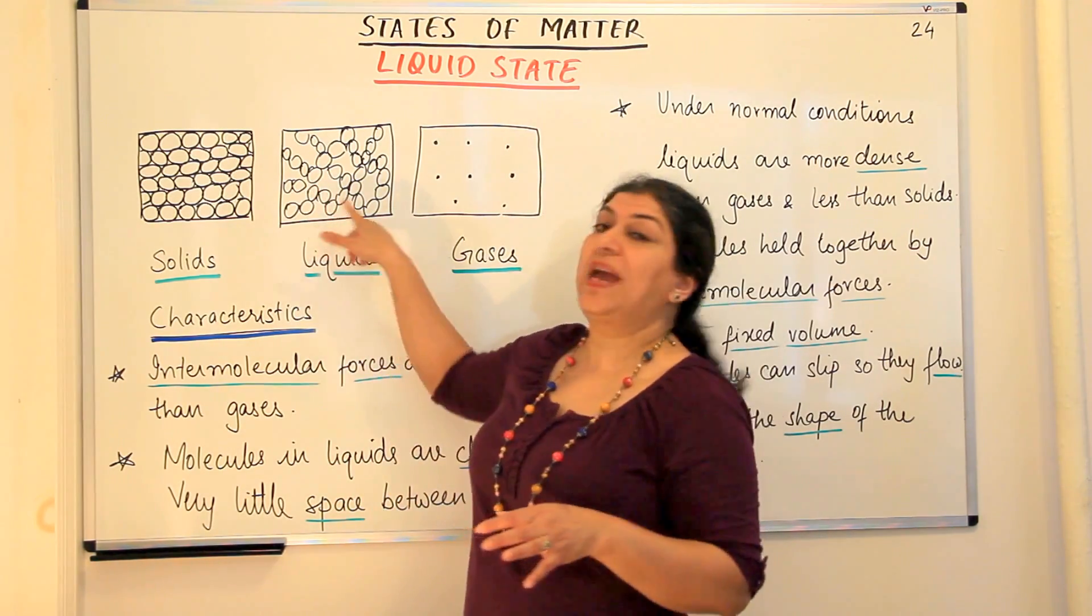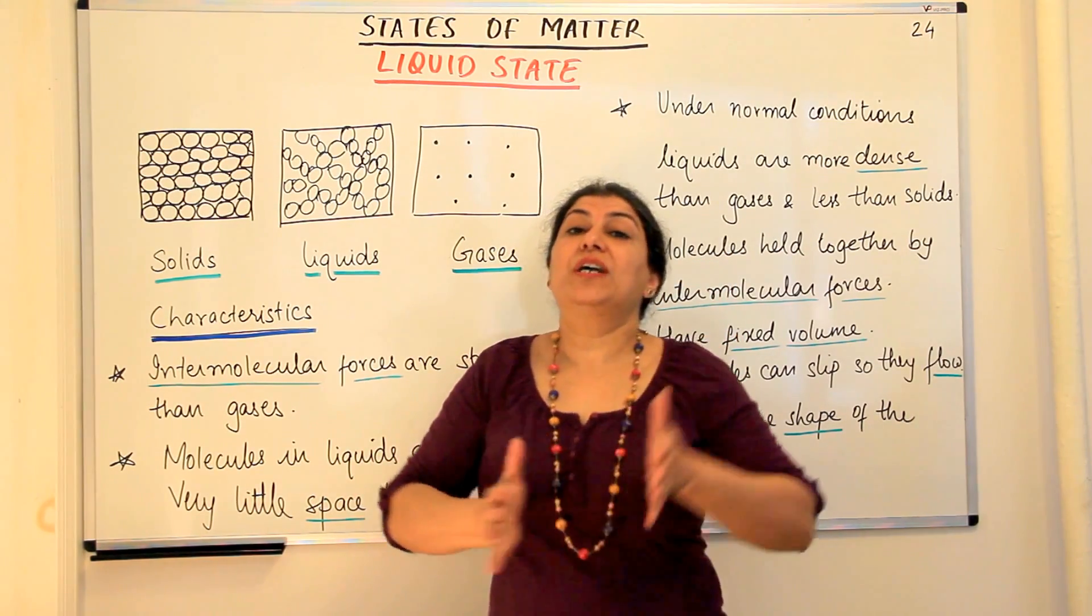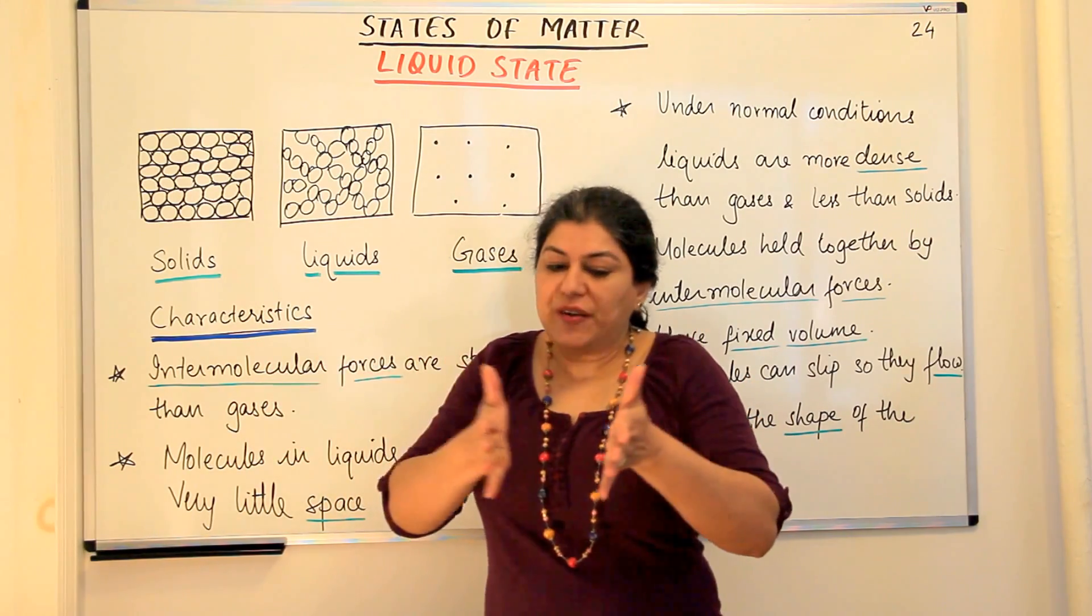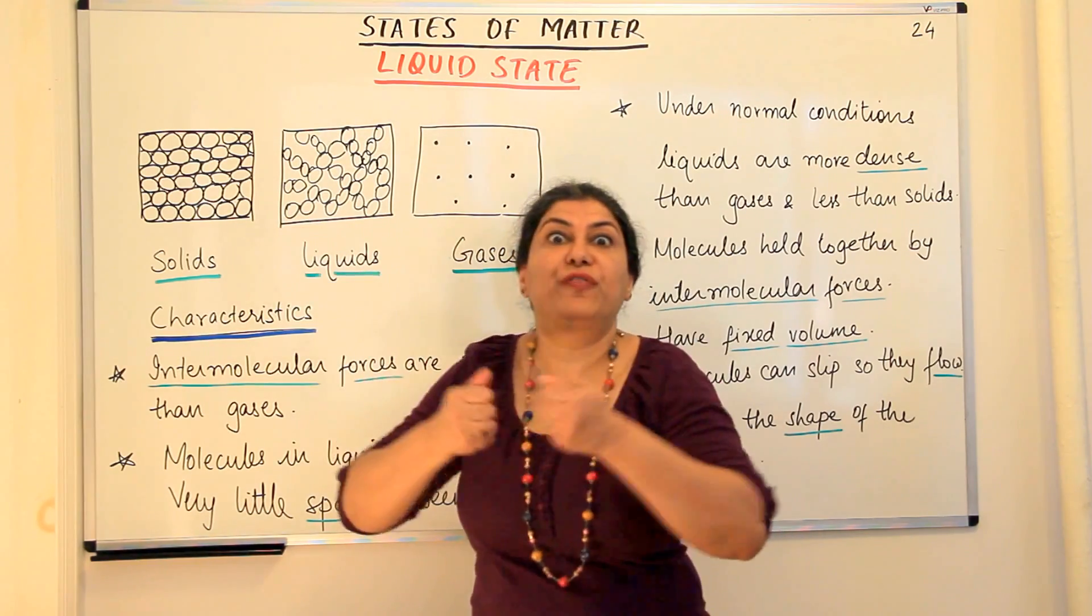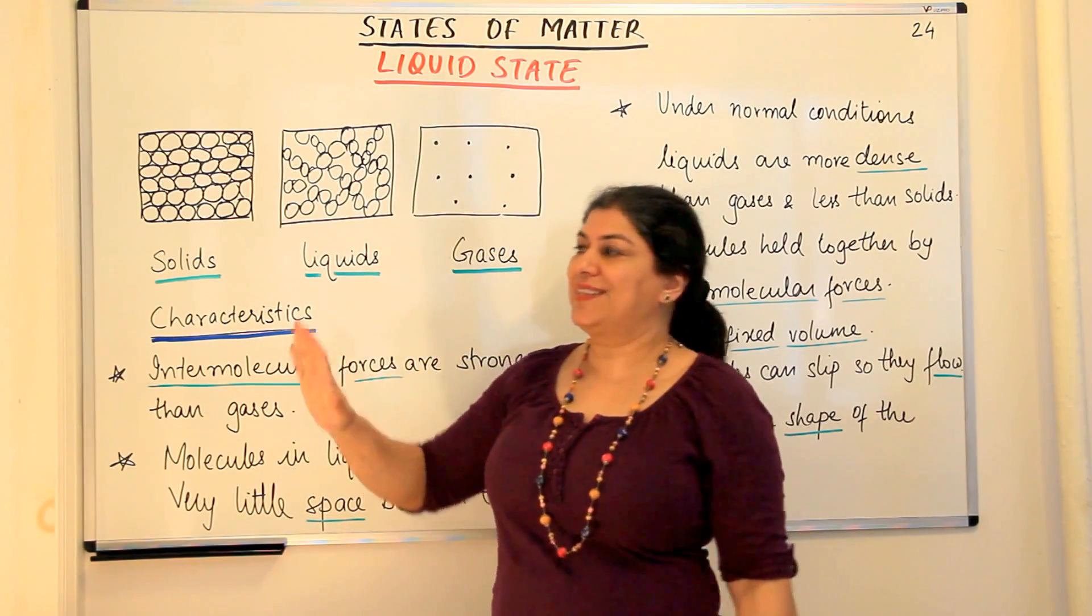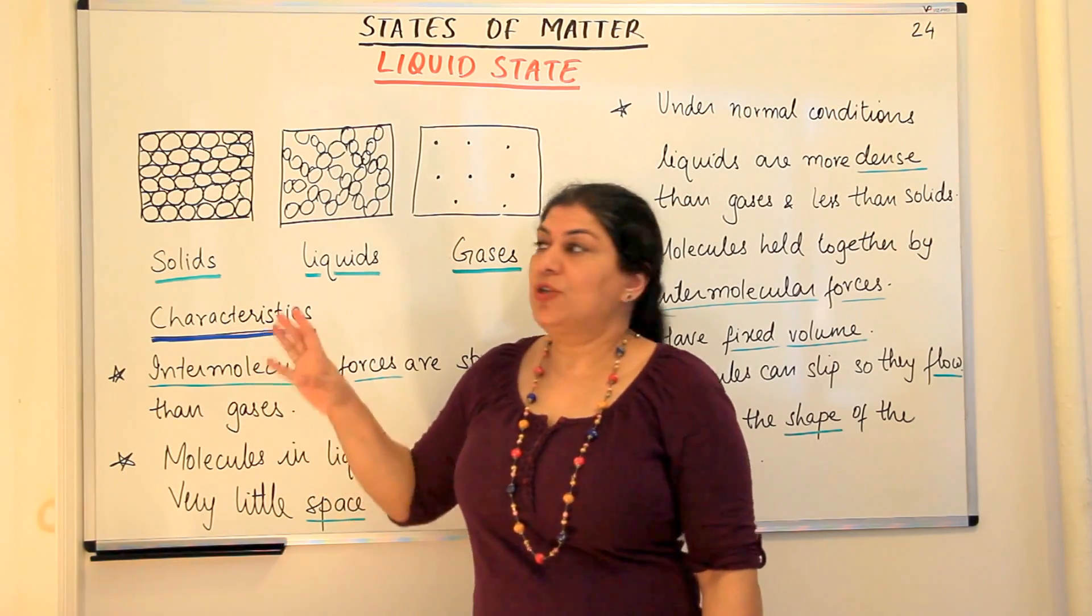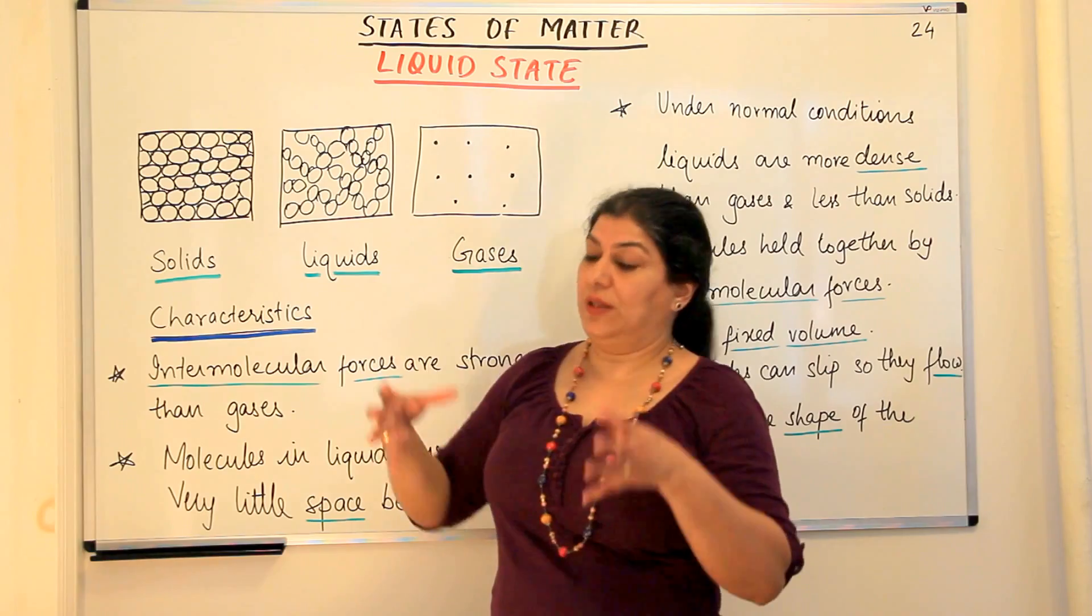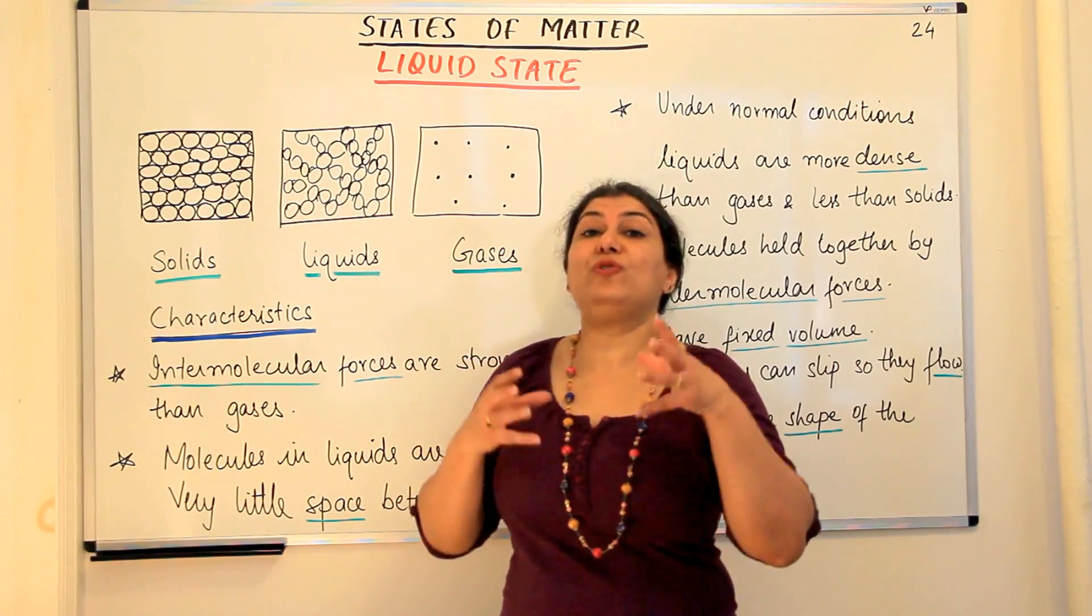Because not only do they have intermolecular forces of attraction, when they come too close the intermolecular forces of repulsion also come into play. So after a certain distance you cannot smoosh the molecules further together. There comes an extent where beyond which they do not come closer to each other.